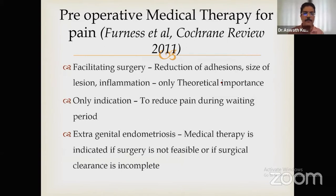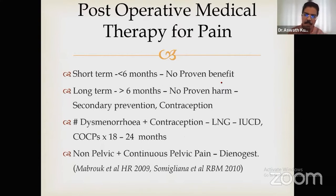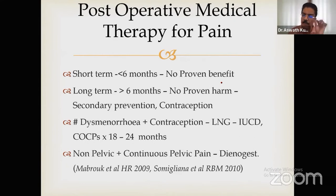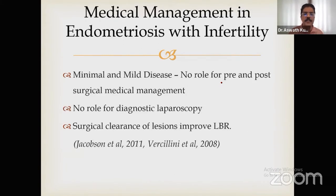Pre-operative medical therapy for pain has no proven role — the only indication is when the patient is in a waiting period before surgery. There is no indication for pre-operative medical treatment if surgery is planned. Post-operatively, the new ESHRE guidelines now include post-operative medical treatment, specifying it should be given for more than six months. There is no proven benefit before six months. If the patient has dysmenorrhea, needs contraception, or is planning for pregnancy, LNG-IUS or continuous OC pills can be given.